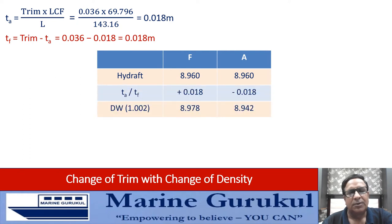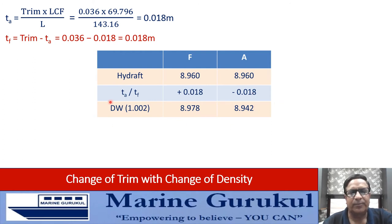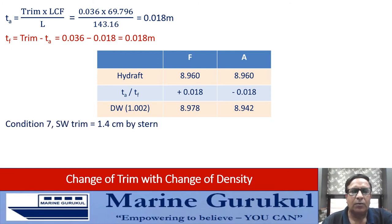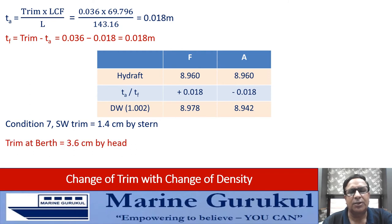So the vessel which had 1.4 centimeters of trim by stern in sea water now changes to 3.6 centimeters by head in dock water. To get the forward and aft drafts, we apply ta and tf to the hydrostatic draft of 8.960 meters. Since trimmed by head, tf is added and ta is subtracted, giving the final drafts of the vessel in dock water at the same displacement as condition number seven.